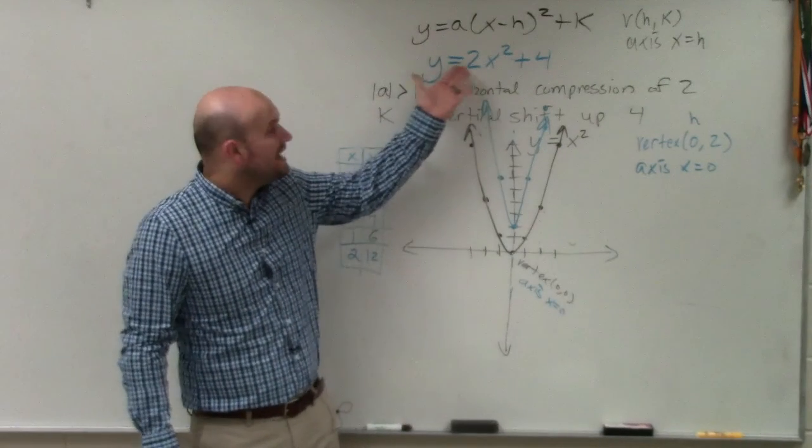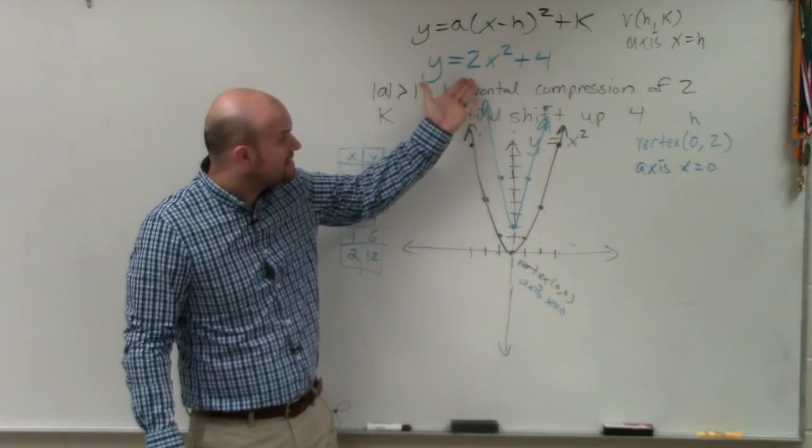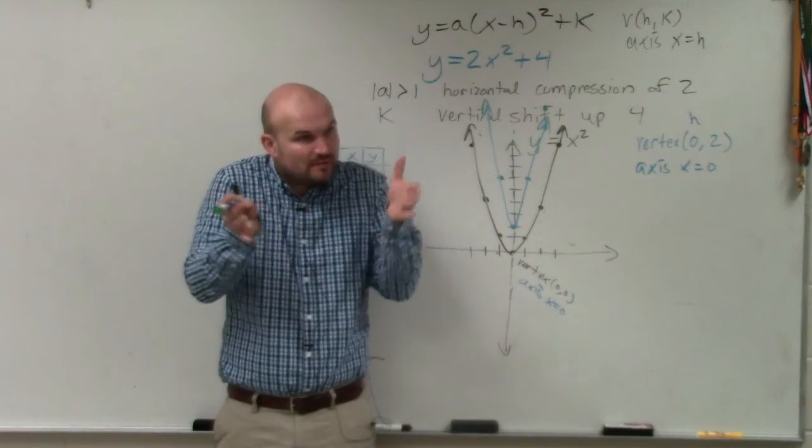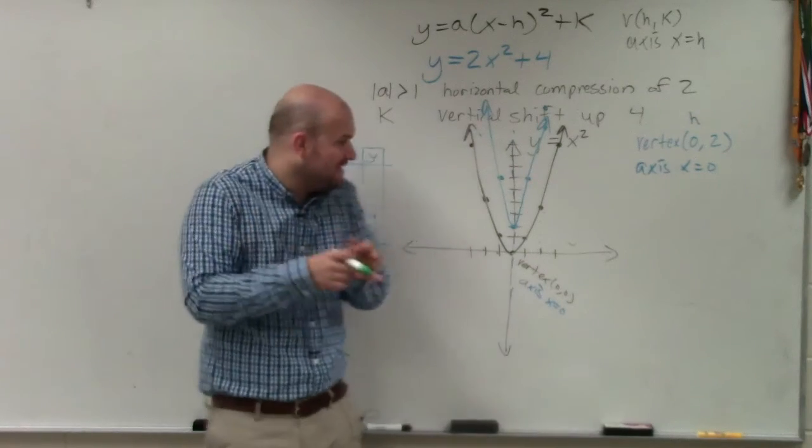Basically, you need to apply this horizontal compression. How does the horizontal, how does that 2 affect the graph? We know it compresses the graph, right? But to graph it, we want to at least find two points that we can find.